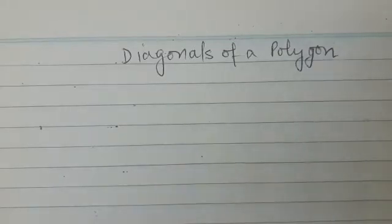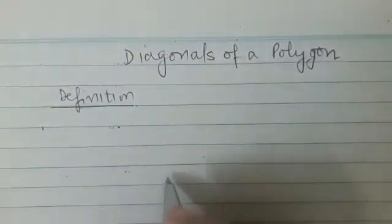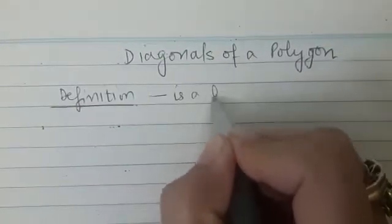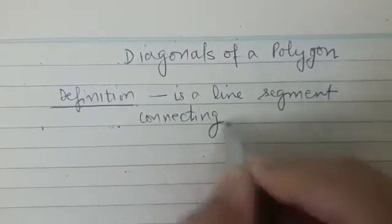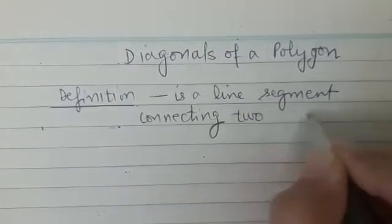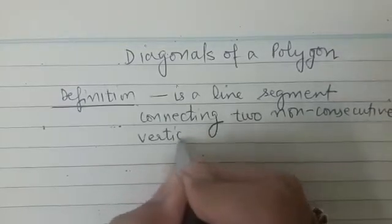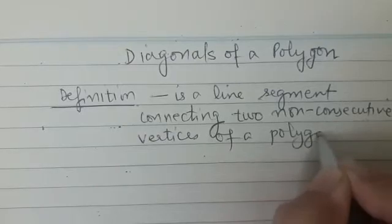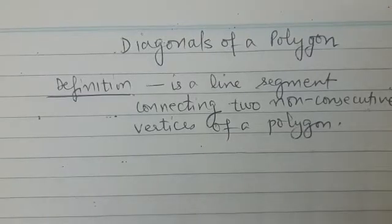Hello dear students. In today's session we will understand the concept of diagonals of a polygon. So first of all let us understand the definition of diagonal. A diagonal is a line segment connecting two non-consecutive vertices of a polygon.